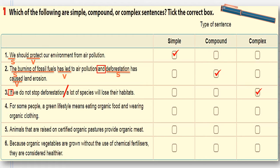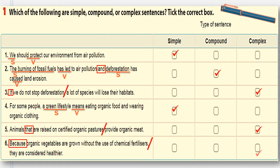Number 4: 'For some people, a green lifestyle means eating organic food and wearing organic clothing.' Subject: a green lifestyle; verb: means — only one subject, one verb — simple sentence. Number 5: 'Animals that are raised on certified organic pasture provide organic meat.' Has the relative pronoun that and two clauses — complex sentence. Number 6: 'Because organic vegetables are grown without the use of chemical fertilizers, they are considered healthier.' Has because and two clauses — complex sentence.